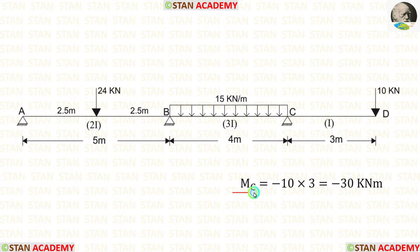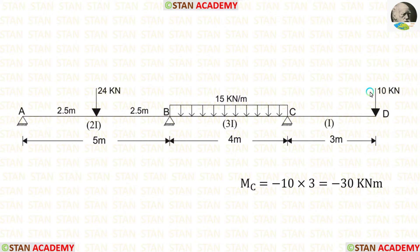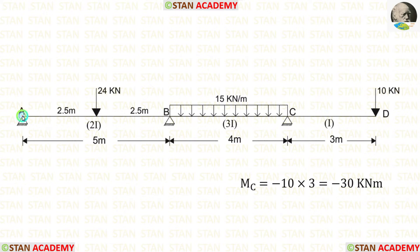In point C, we can easily find the moment because on the right of C there is an overhang. To find MC, we multiply the load of 10 kN by the overhanging distance of 3 meters. We must always apply a negative sign with the load so that we get a negative moment.